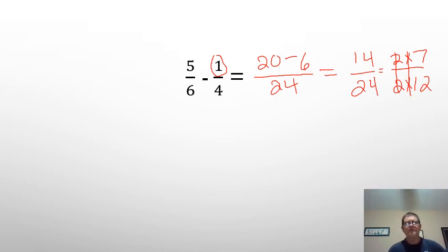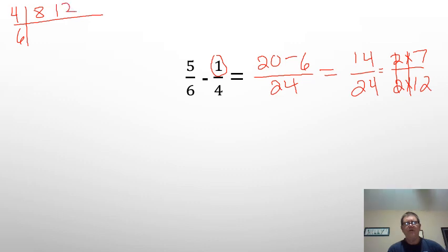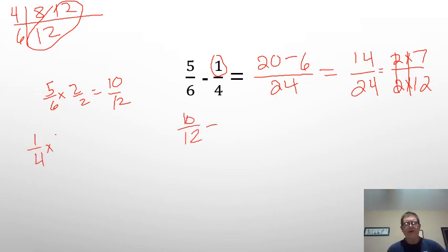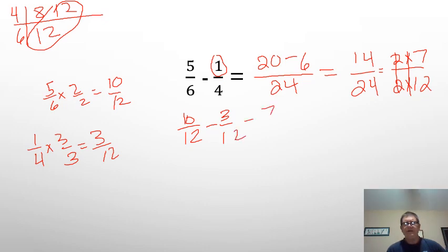Now let's try finding a least common denominator for that same problem. I'm going to go 4 and 6: 4, 8, 12 — and 6, 12 — there's that 12 again. So that means if I took both fractions and turned them into 12ths: 5/6 times 2/2 would give me 10/12. So this one is 10/12 minus 1/4. I know it's going to be times 3/3 because 3 times 4 is 12, so it's going to be 3/12. And 10/12 minus 3/12 gives me 7/12. I'm already in simplest form because I used my lowest common multiple.